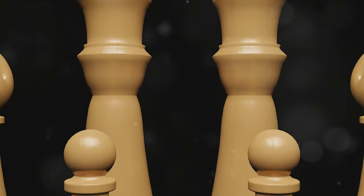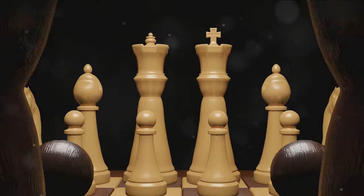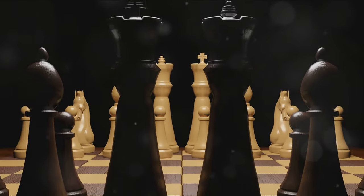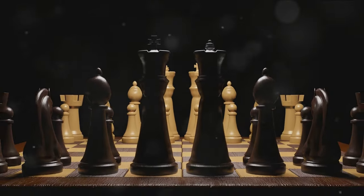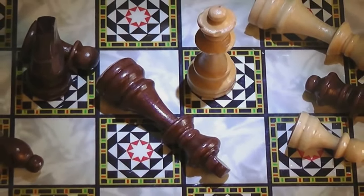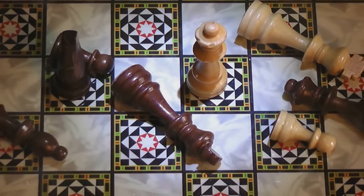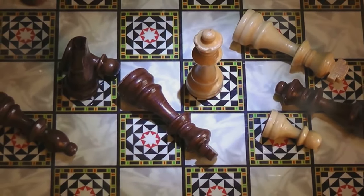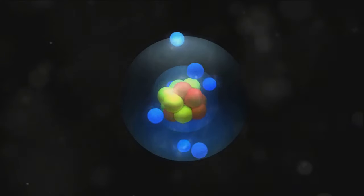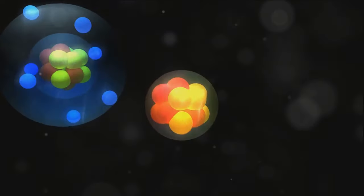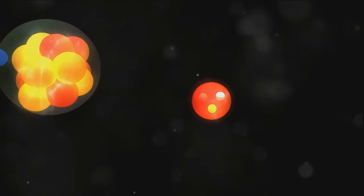Now, imagine a game of chess. Each piece on the board, whether it's the king, queen, or a pawn, has an array of possible moves it can make. Until a move is made, the piece holds the potential for all those moves. It's a world of possibilities, awaiting the player's choice. This is a bit like quantum particles. Quantum particles can exist in multiple states at once, much like a chess piece can have multiple potential moves. This is due to a principle called superposition.